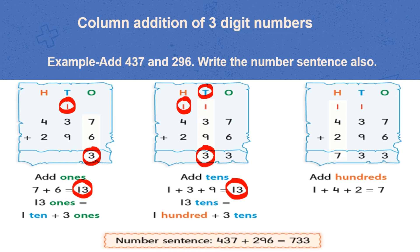Finally, adding all digits at 100's place, 1, 4, 2 will give 7. So, our result will be 733. And this is how we write in number sentence.